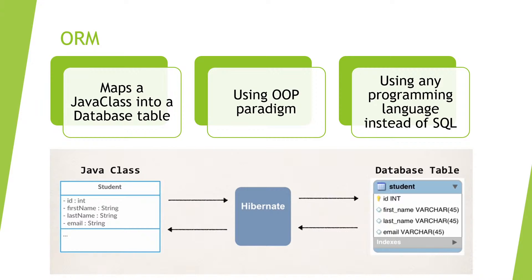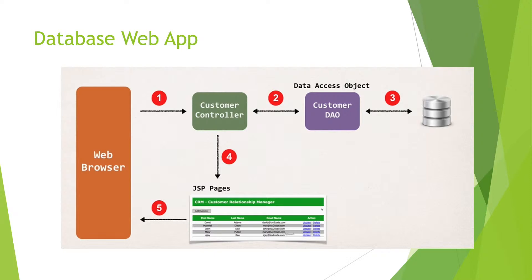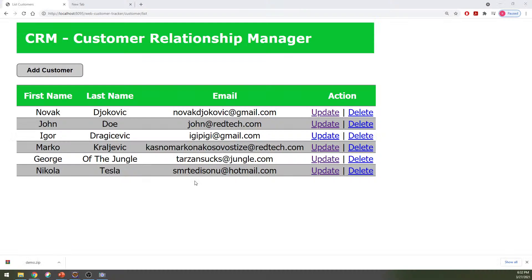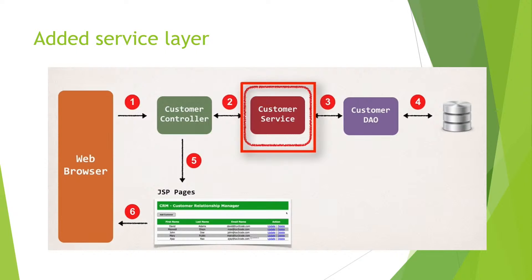Now let's move on to how our database looks like — what is the architecture behind our database? This is the schema of how our database web app looks like. We have a data access class — data access object, DAO — to access the database, and a controller to process the requests. Because we're making this relationship manager, we need the database to store all of this information. This is simple and good because we have this data access object connected to a database — here we're using Hibernate to connect to the database. But we might be missing something.